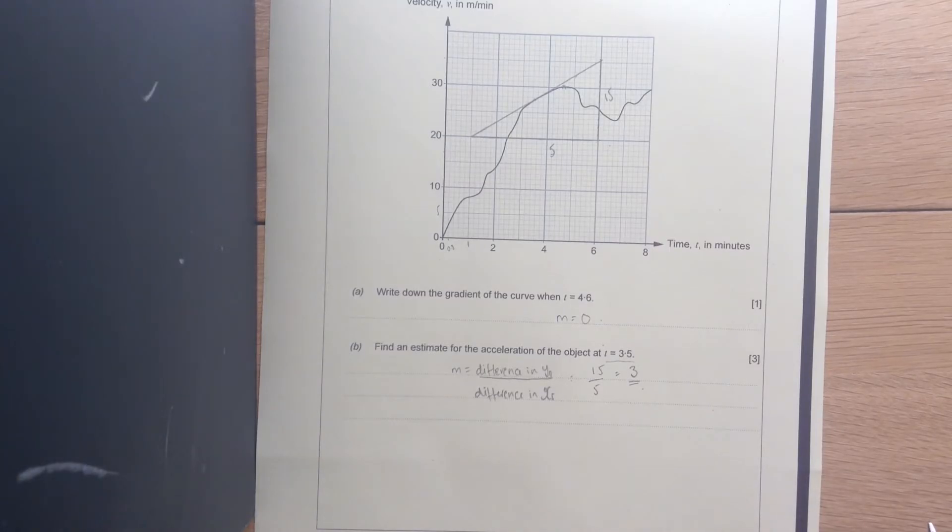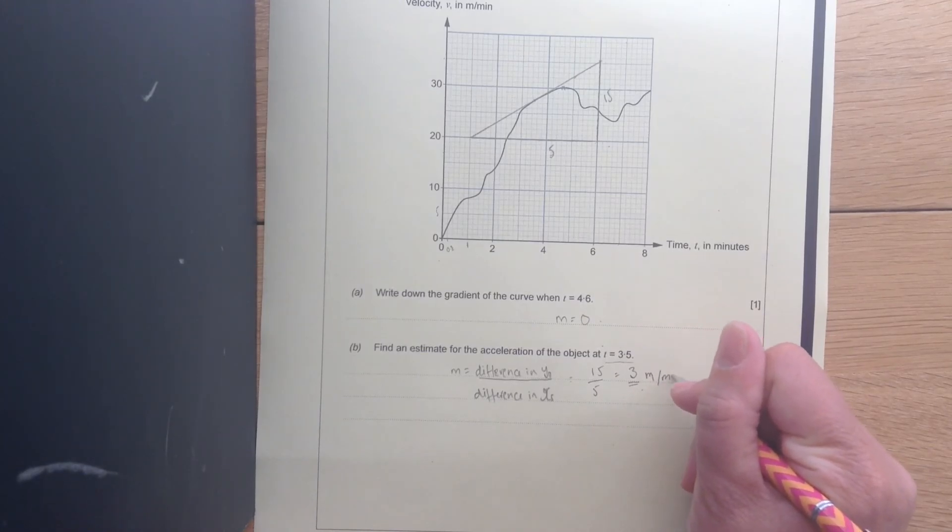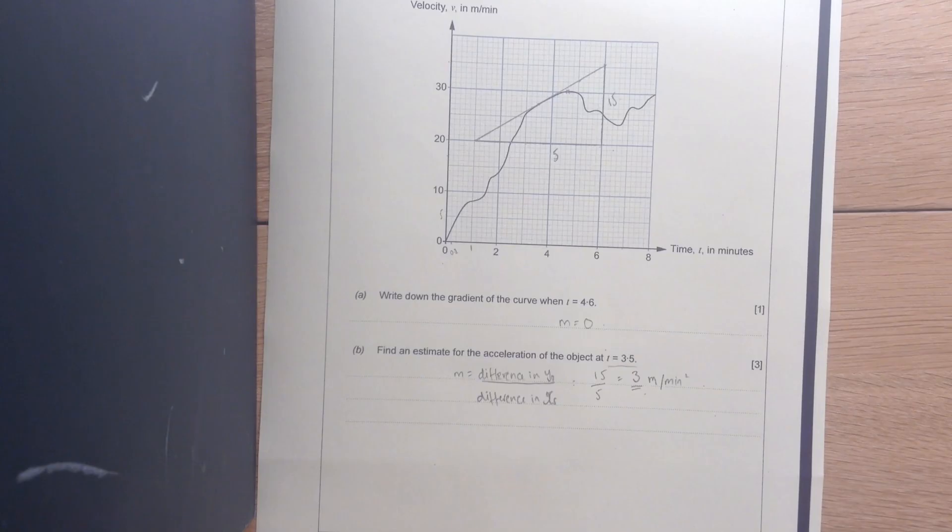Now don't forget that you might find different values according to your tangent. Okay? So for example, on the mark scheme, it says approximately 3.3. Okay? And this is meters per minute squared.